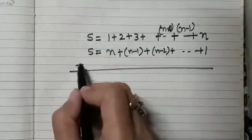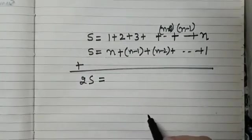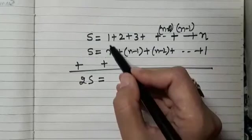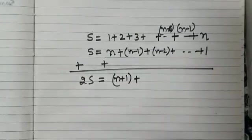Now add these. So S plus S gives us 2S, which is equal to, now tell me, 1 plus n, that is n plus 1, plus,